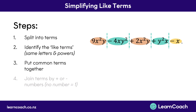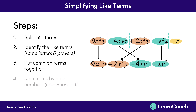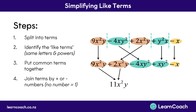Step three: write these common terms together — the x squared y's next to each other, the xy squared's next to each other, and leave the x by itself at the end. Step four: join the like terms by adding or subtracting the numbers. Remember, if there's no number it's a 1. So 9 plus 2 gives us 11x squared y. Negative 4 xy squared plus 1 xy squared gives negative 3 xy squared. And finally we just have negative 1x. That's your simplified expression.